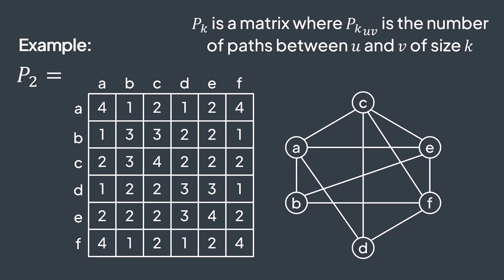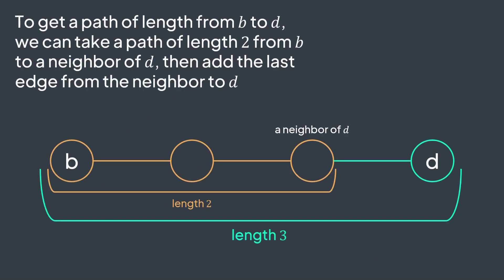Let's try to calculate P3 bd for example, paths of length 3 between b and d. To get a path of length 3 from b to d, what we can do is simply take a path of length 2 from b to one of the neighbors of d, and add that last edge to get a path of length 3.